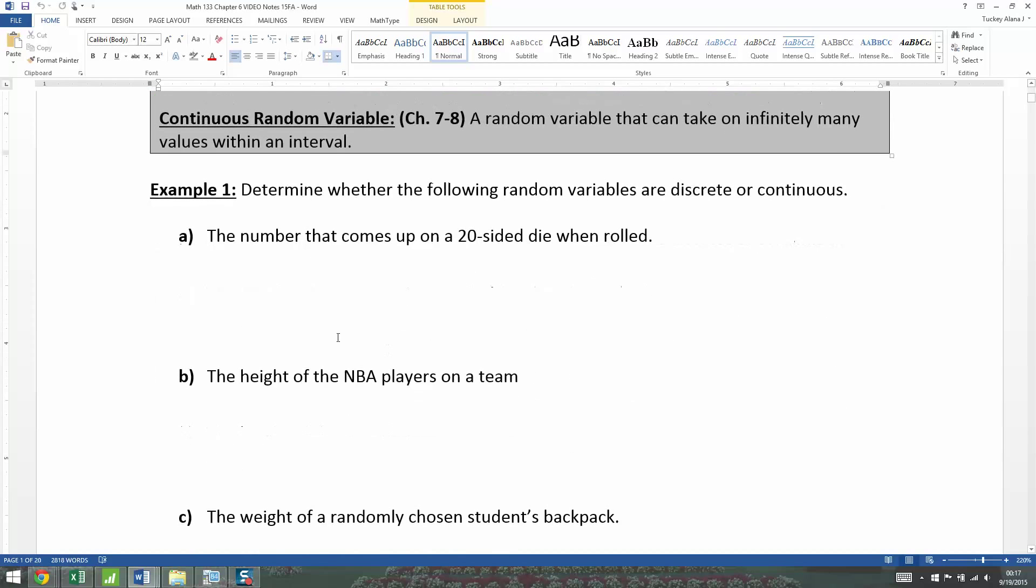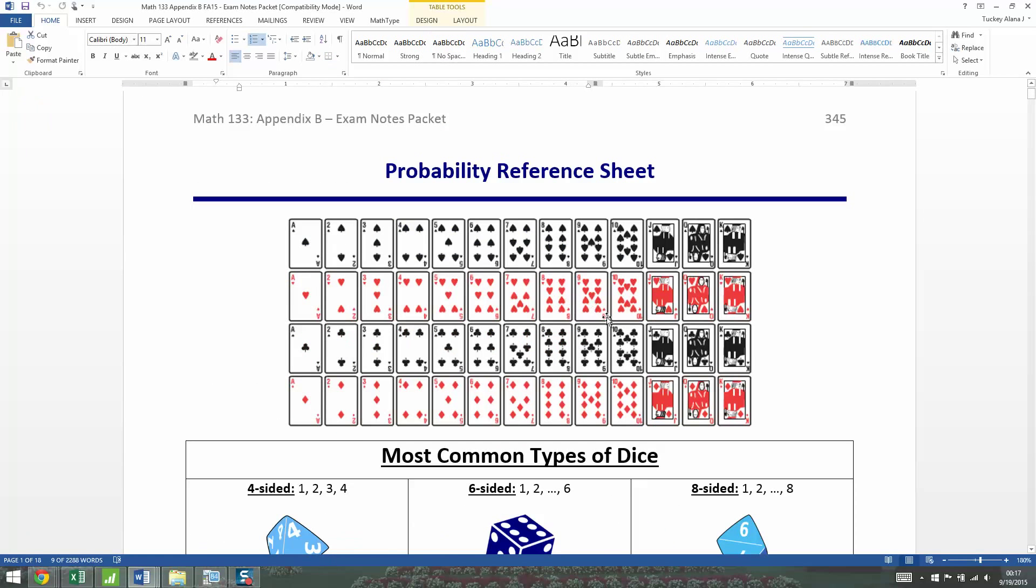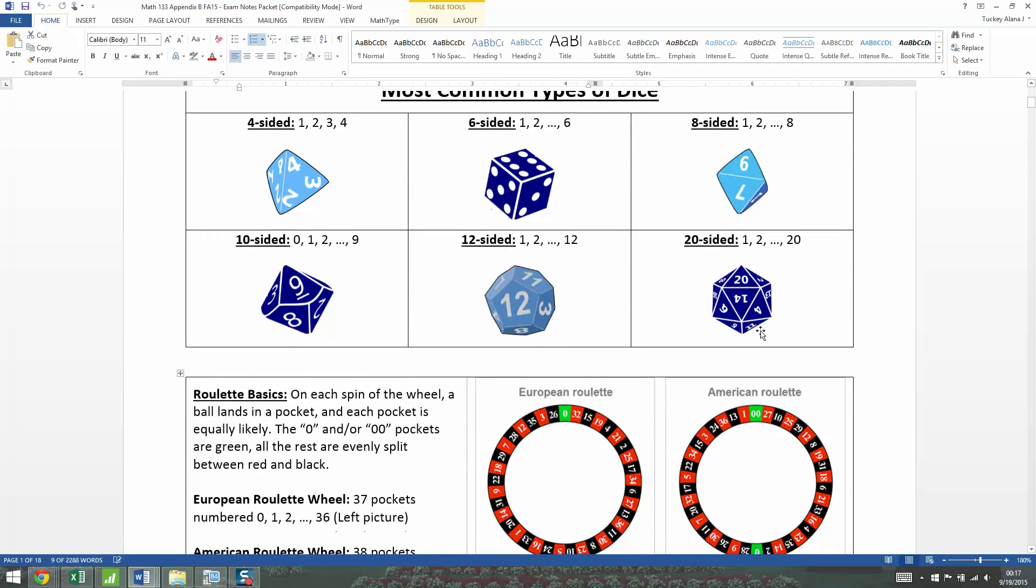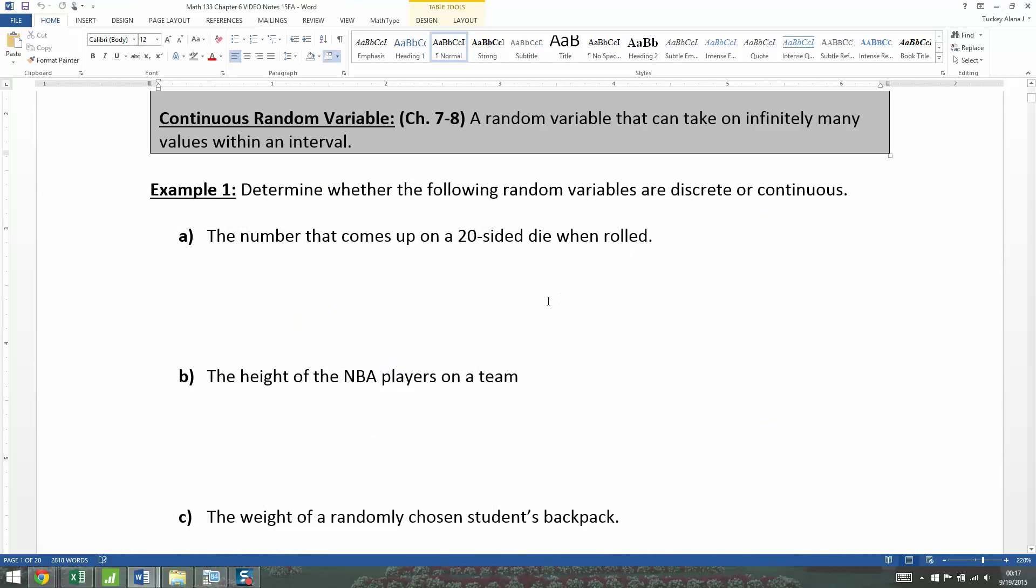So we're going to determine whether the following random variables are discrete or continuous. The number that comes up on a 20-sided die, let me remind you what a 20-sided die looks like here in the probability reference sheet from our appendix. 20-sided dice look like this. So they have 20 sides that are all equal triangles. The number that comes up would be a discrete thing, right? Because it's either 4 or it's 6 or it's 14. But you can't have the die roll 14.23642. So that makes this very much discrete.